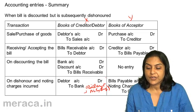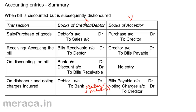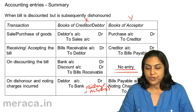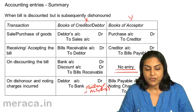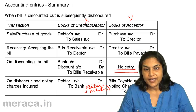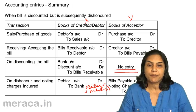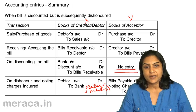Correspondingly in Y's books, the first two entries remain the same: purchase account debit to X; X's account debit to bills payable. When X discounts the bill, no entry in Y's books. But when the bill is dishonoured, the entry is: bills payable account debit with the amount of the bill; noting charges account debit with the noting charges amount; to X's account 10,200.